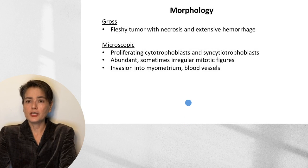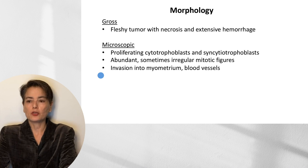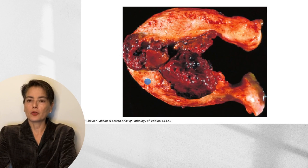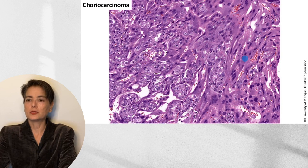Morphologically, choriocarcinoma is a fleshy tumor with extensive necrosis and hemorrhage. Microscopically, we see proliferating cytotrophoblasts and syncytiotrophoblasts with abundant, sometimes irregular mitotic figures and invasion into myometrium and blood vessels. Here is a gross hysterectomy specimen that has been bivalved, showing a fleshy, hemorrhagic, and necrotic mass. Histologically, on the right side is primarily syncytiotrophoblasts — recognizable by the absence of cell boundaries and multinucleate cells — with small clumps of cytotrophoblasts admixed.